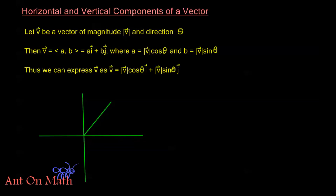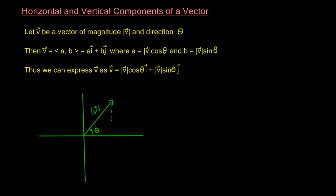So let's say this is my vector V. The vector V has a magnitude of |V|, so the total length of this vector is |V|. Now theta is the angle between the positive x-axis and the vector V when the vector is drawn in standard position. We know that A and B in component form give us the horizontal component A at the base of this triangle, and this side of the triangle has length B — that's the vertical component of the vector.